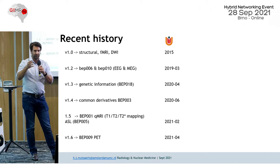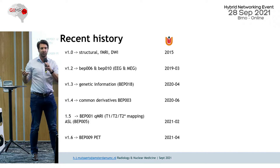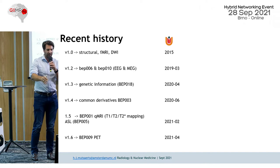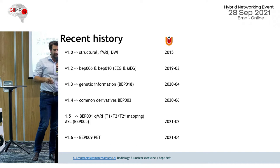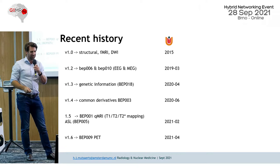In BITs version 1.5, Patricia will show more detail, but we got QMRI — quantitative MRI: T1, T2, T2* mapping, and ASL. There are some discussions because, for example, repetition time means something very different for fMRI versus T1 mapping or ASL, where you can vary the repetition time. In version 1.6, PET was introduced — it was quite a close race but we got there just before them.